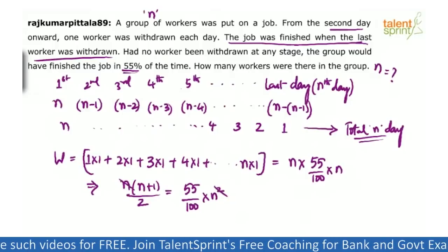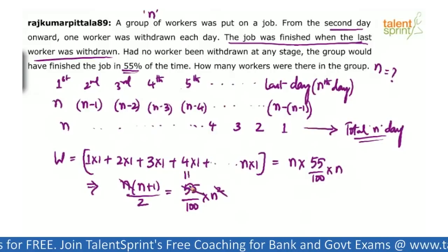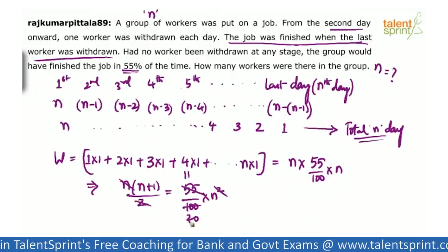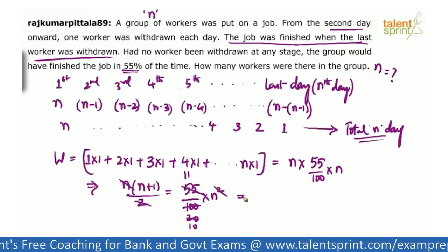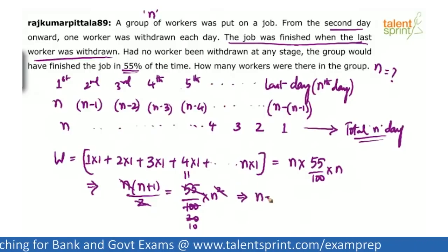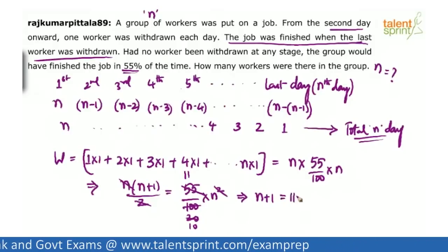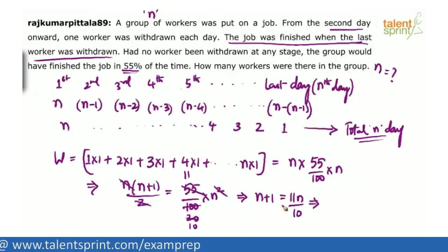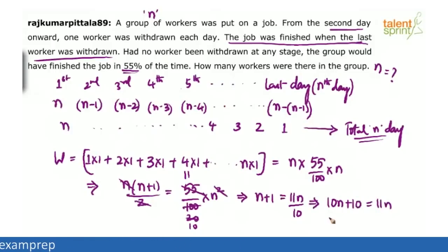Simplifying: n cancels on both sides, giving (n+1)/2 = 11n/20, so n+1 = 11n/10. Then 10n + 10 = 11n, which gives n = 10. So there were 10 workers in total, and the work went on for 10 days with one worker removed each day from the second day onwards.